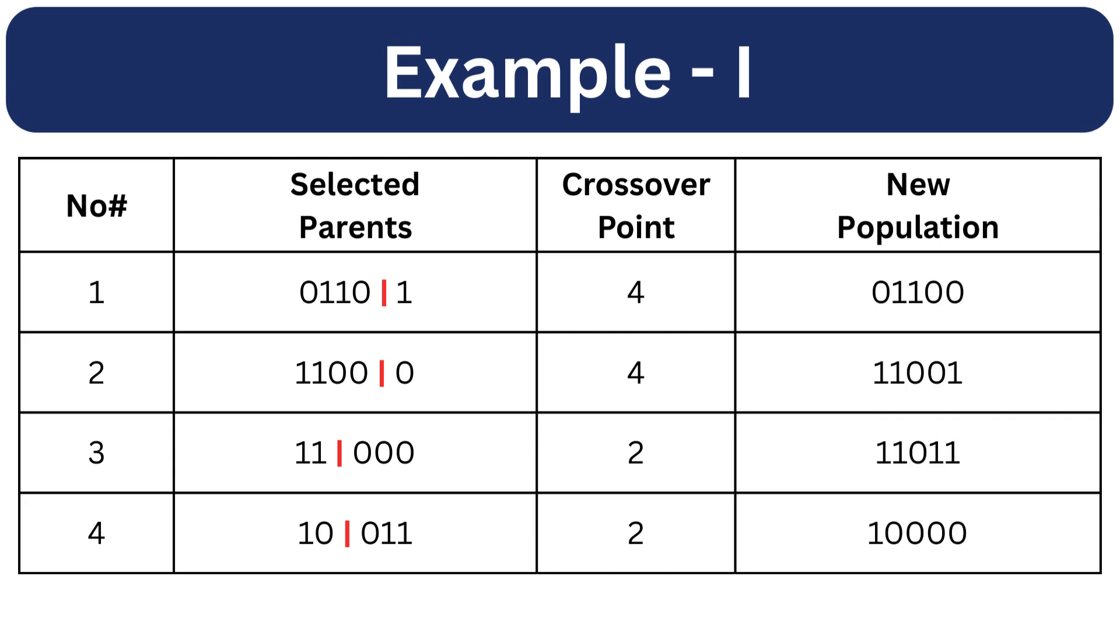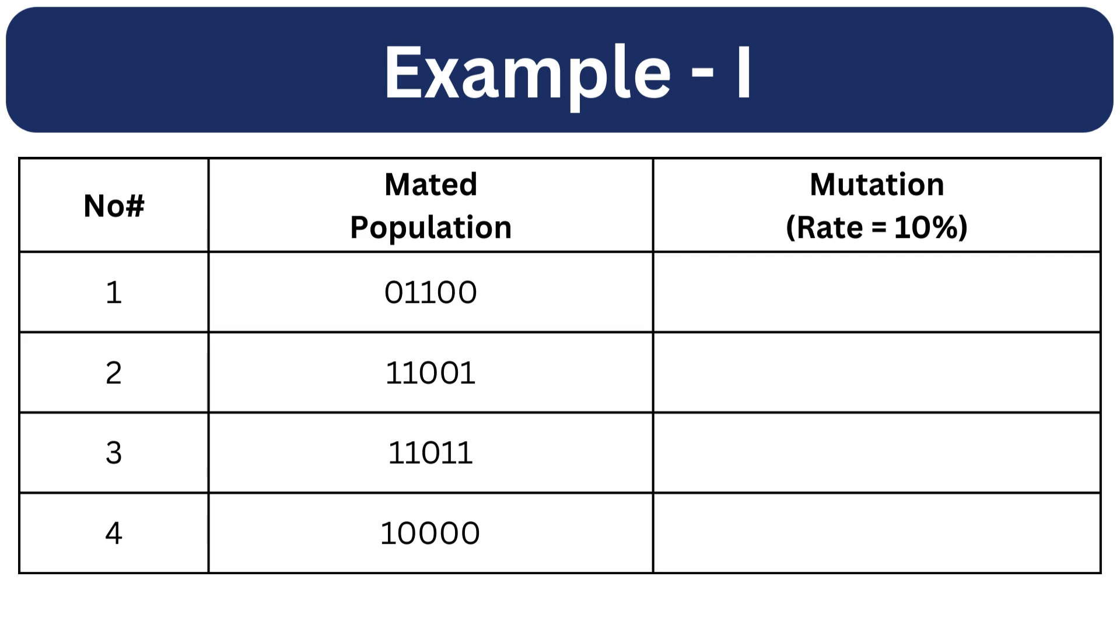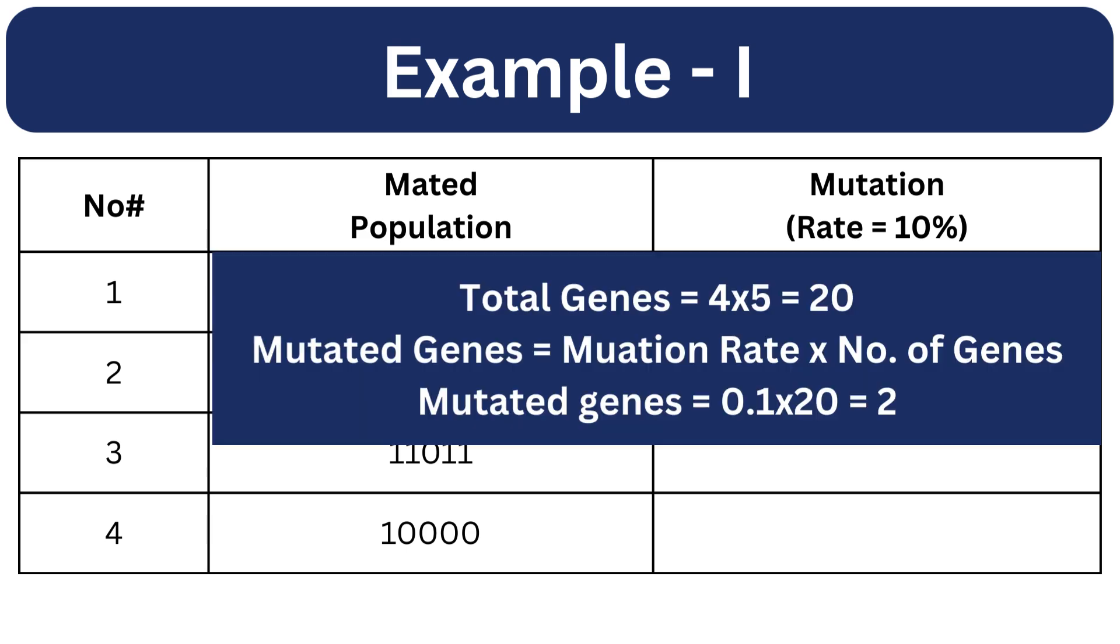Now we will apply mutation to the newly mated population. We have set the mutation rate to 10%. There are 4 individuals in this population. Each is represented by 5 genes. So total genes are 20.